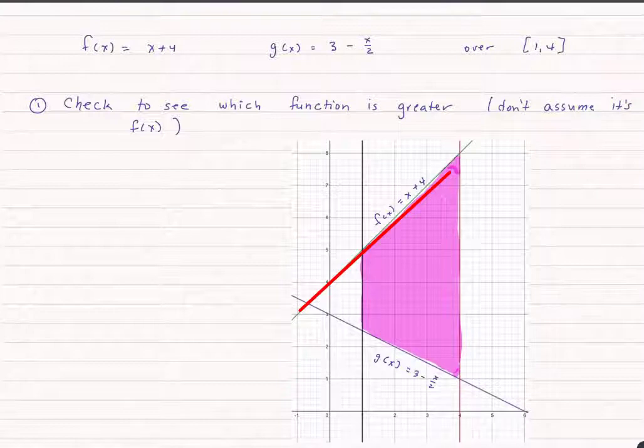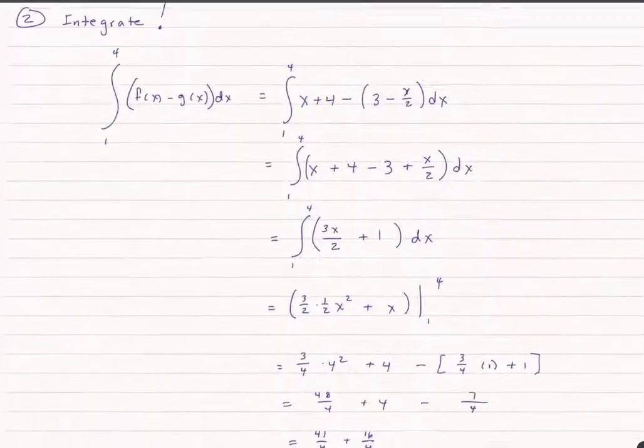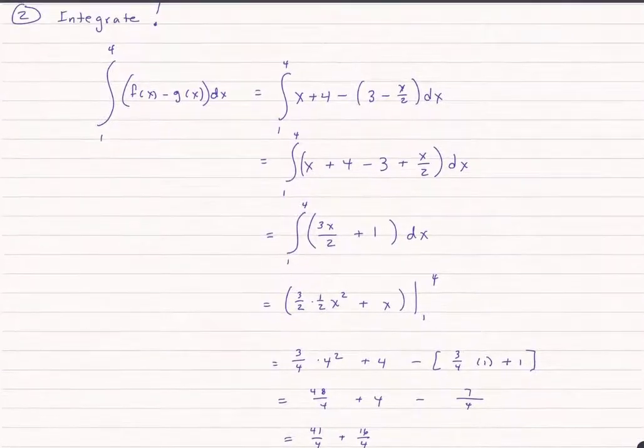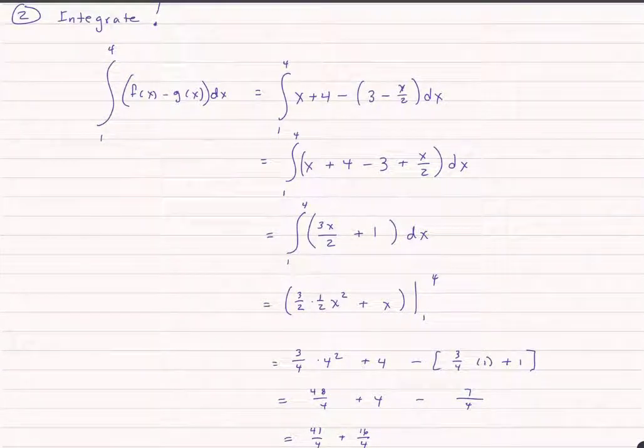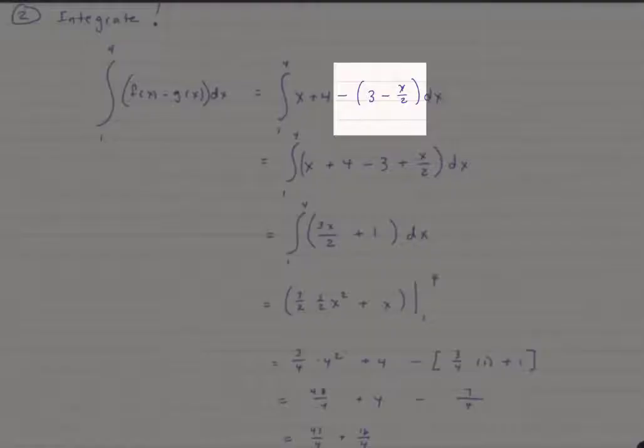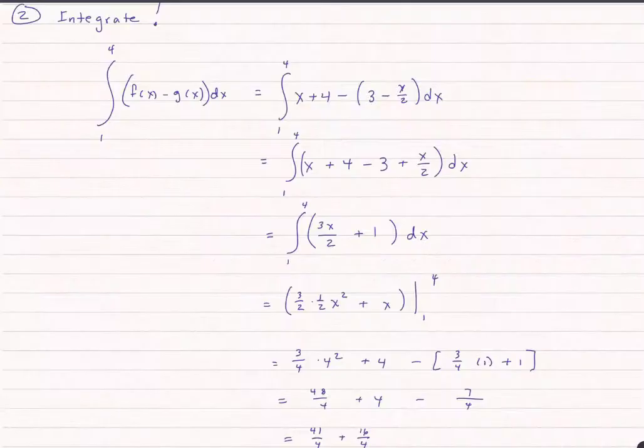So once we do that, we're just going to integrate. We're going to set this up from 1 to 4. Again, f of x minus g of x. Remember to use parentheses. It's negative all of the g of x, not just the 3.